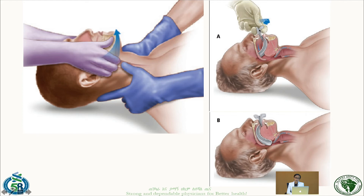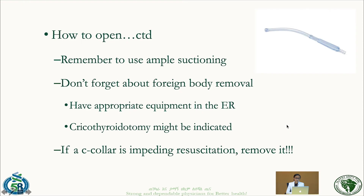For oropharyngeal airway insertion: first do jaw thrust, then insert the airway with the curvature facing down on the opposite side, and once positioned, slowly rotate it within the mouth so it follows the anatomical position of the patient's oral airway.